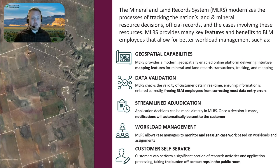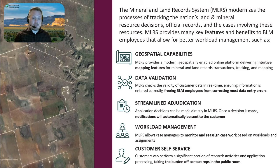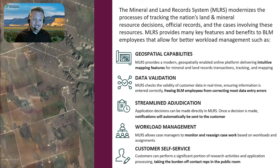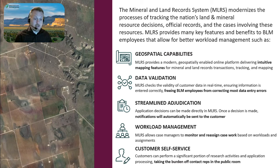Here are the five major categories we're focusing on. The big one we're talking about today is the geospatial capabilities — being able to tie geospatial with our legacy case information that's more tabular in nature is really key to MLRS' success. Data validation is also huge. We're trying to make sure that data inputted into the system, either through the community or through the BLM internal user, has validation checks that ensure better quality data. We're also looking for streamlined adjudication through standardized workflows throughout the entire U.S.